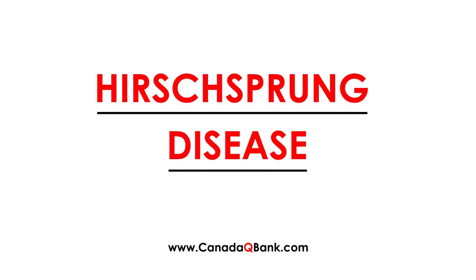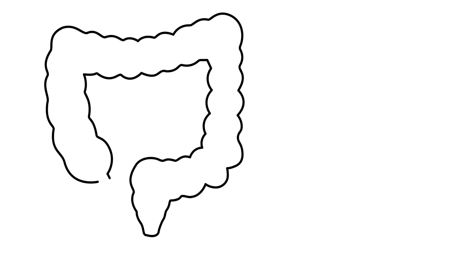Hirschsprung Disease is the topic. It's best characterized with this diagram of the colon. Essentially, there is an area at the very end of the colon that no longer has proper innervation — the nerves are absent. As a result, the peristalsis that normally pushes the stool along the bowel is not happening.